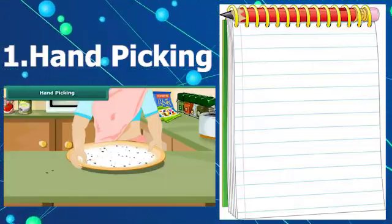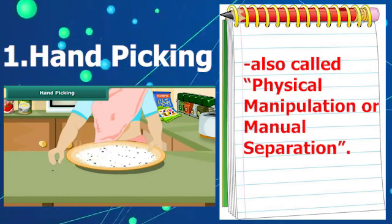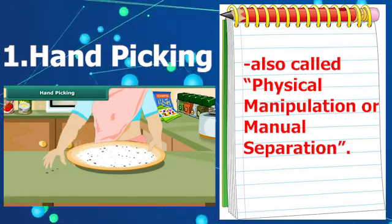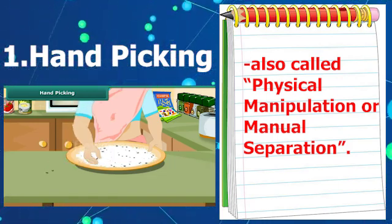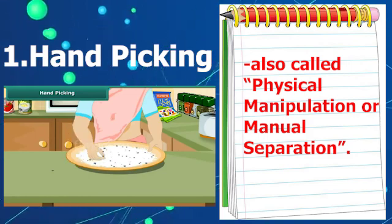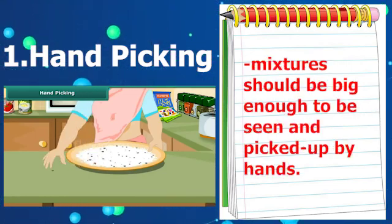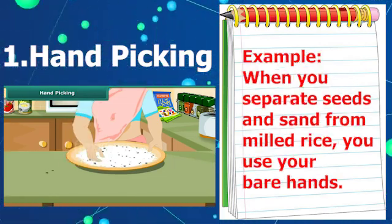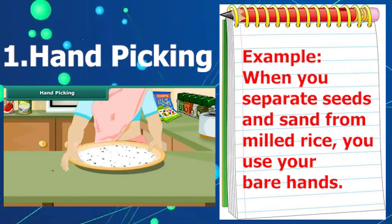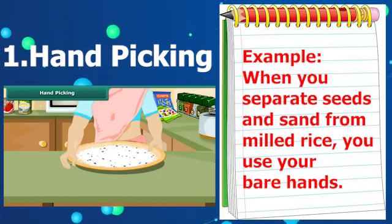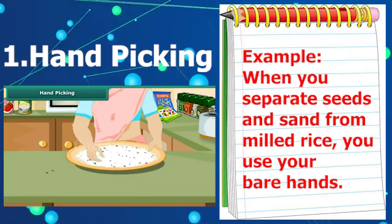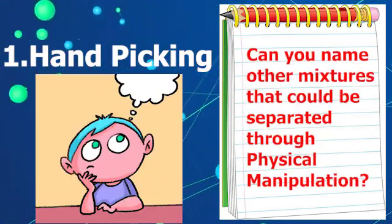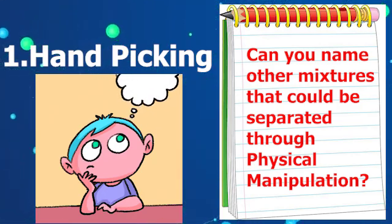Number one: hand picking. It is also called physical manipulation or manual separation. This technique is used in separating solid components of a heterogeneous mixture. The components should be big enough to be seen and picked up by hands. For example, when you separate seeds and sand from milled rice, you use your bare hands. Can you name other mixtures that could be separated through physical manipulation?